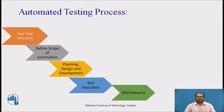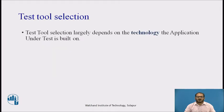Let us consider the automated testing process. The following steps are carried out in an automation process: test tool selection, defining the scope of automation, planning, designing and development, test execution, and maintenance. Test tool selection largely depends on the technology the application under test is built on.